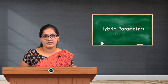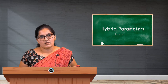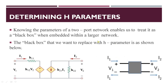This is how a BJT looks in its H parameter circuit form. Knowing the parameters of a two-port network enables us to treat it as a black box when embedded within a larger network. By treating this as a black box and exposing only the two input terminals and output terminals, it is possible to represent a hybrid network. The H parameters — h11, h12, h21, and h22 — come inside this black box, with the remaining four terminals representing the input port and output port.